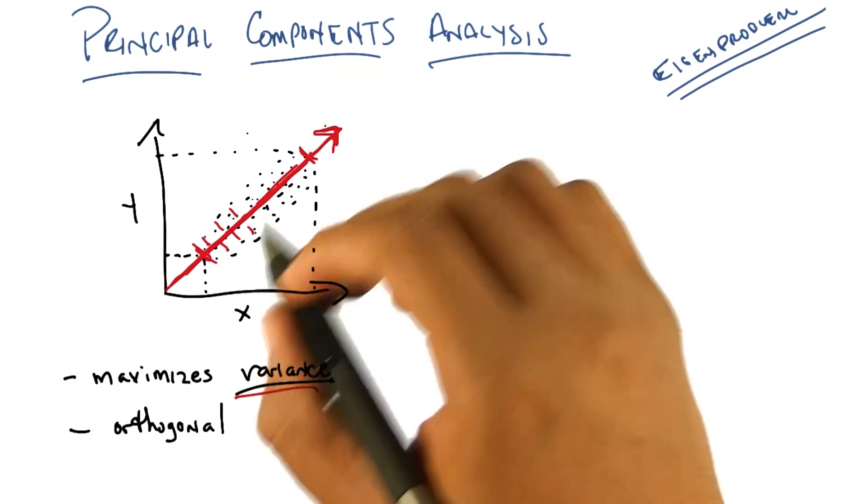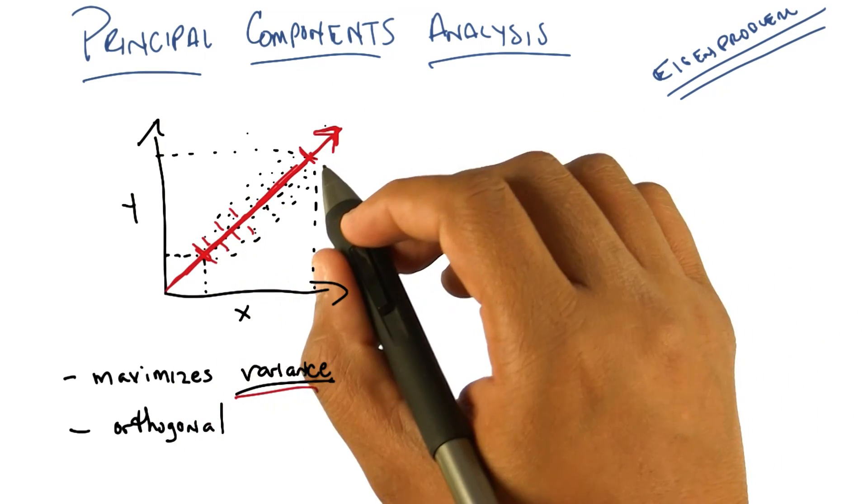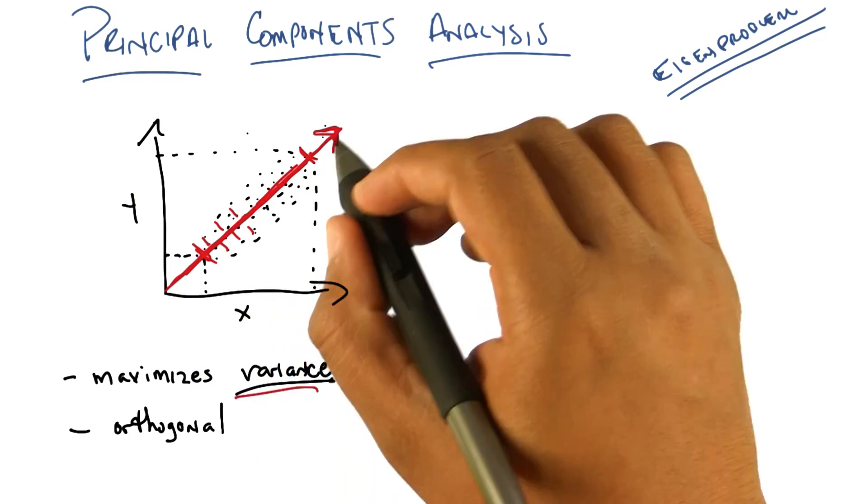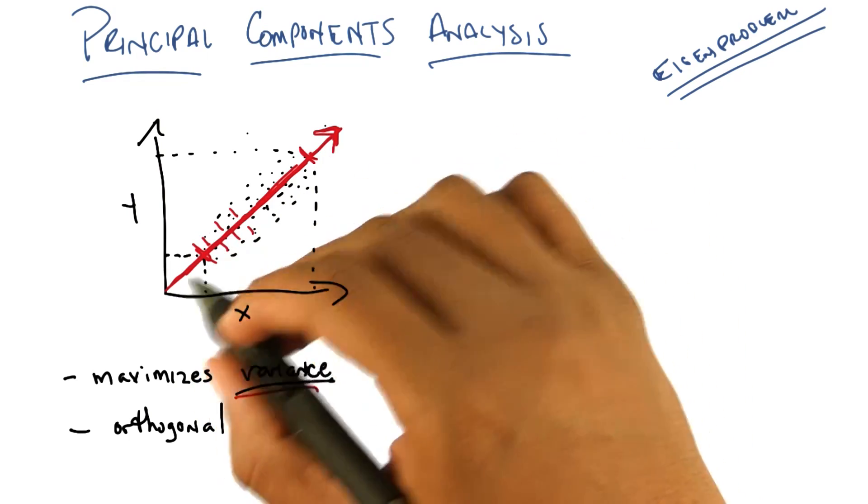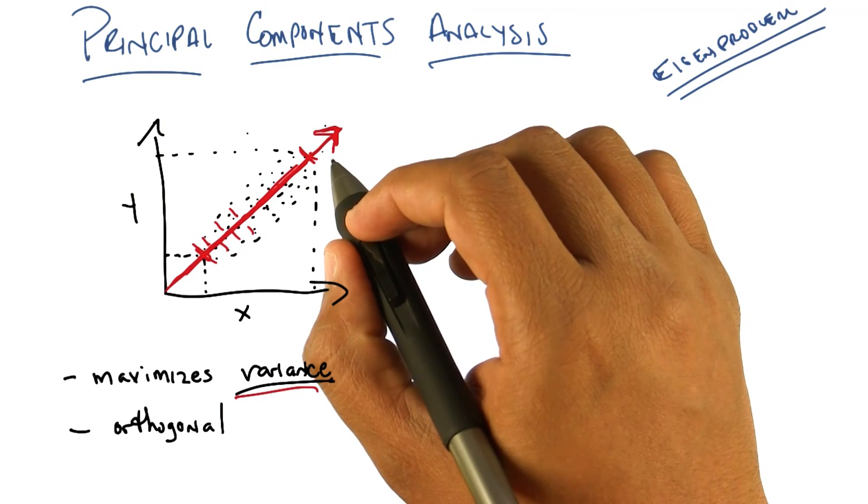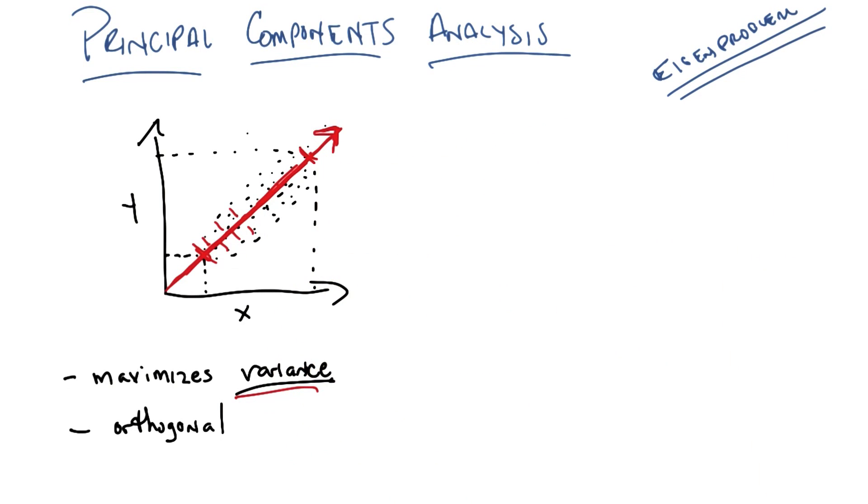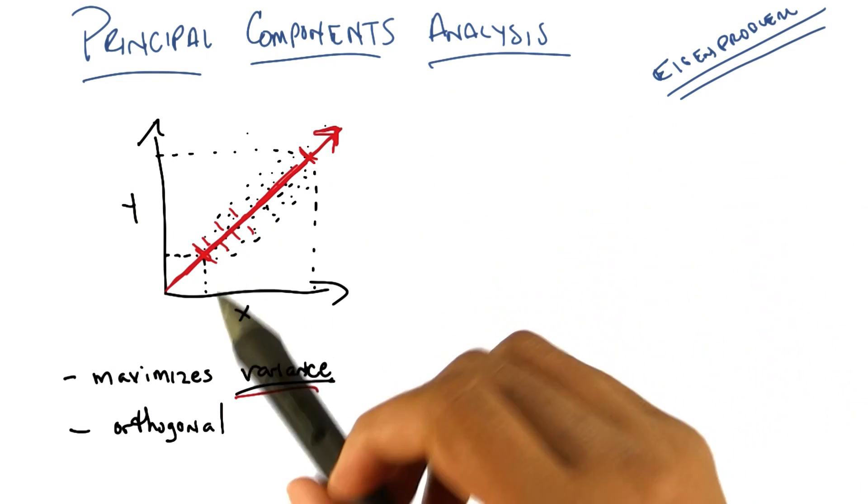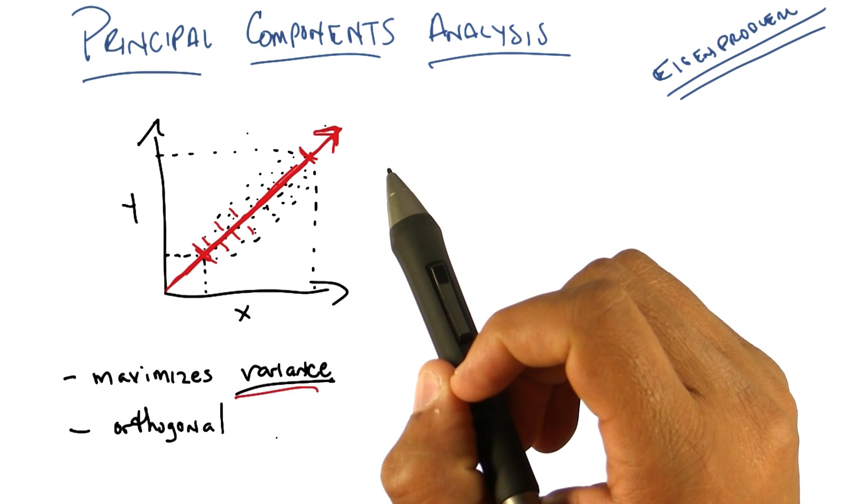So, in fact, since there are only two dimensions here, the very next thing that principal components analysis would do is it would find a direction that is orthogonal, or we think about it in two dimensions, as perpendicular to the first component that it found. I see. So there really is only one choice at that point. That's right. Or, you know, there's two choices because it doesn't matter which direction you pick in principle.